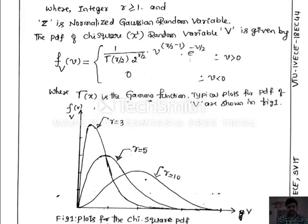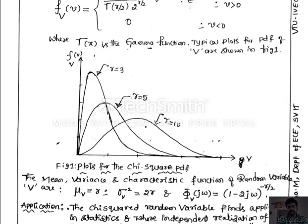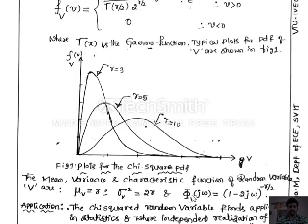Some of the expectations of the chi-square random variable are as follows. The mean of V is equal to its order R. The variance is equal to 2R. The characteristic function of the chi-square random variable is given by phi_V(j omega) equal to (1 minus 2j omega) to the power of minus R/2.